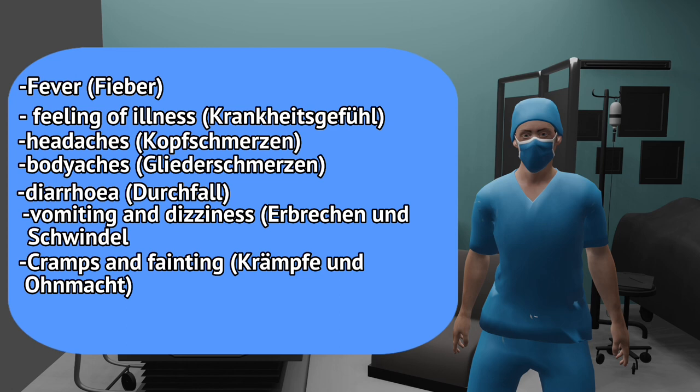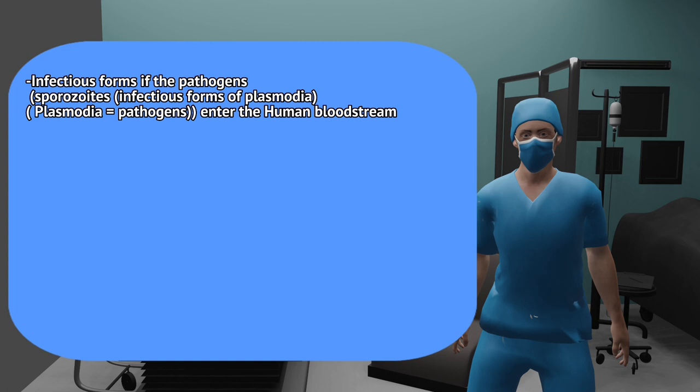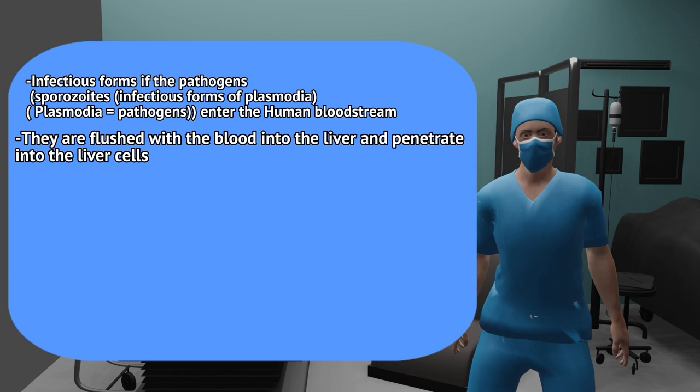What happens when you get bitten by a mosquito? During the bite of an infected mosquito, the infectious forms of the pathogen — sporozoites — enter the human bloodstream with the mosquito's saliva. With the blood, they are flushed into the liver and penetrate the liver cells.